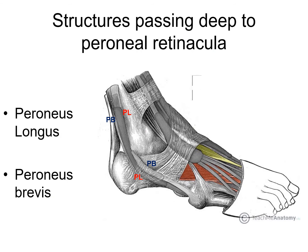Structures passing deep to peroneal retinaculum: peroneus longus and peroneus brevis tendons pass deep to peroneal retinaculum, but their position differs in each. In the superior peroneal retinaculum, peroneus longus is superficial and peroneus brevis is deep. In the inferior peroneal retinaculum, peroneus longus tendon is inferior and peroneus brevis tendon is superior.